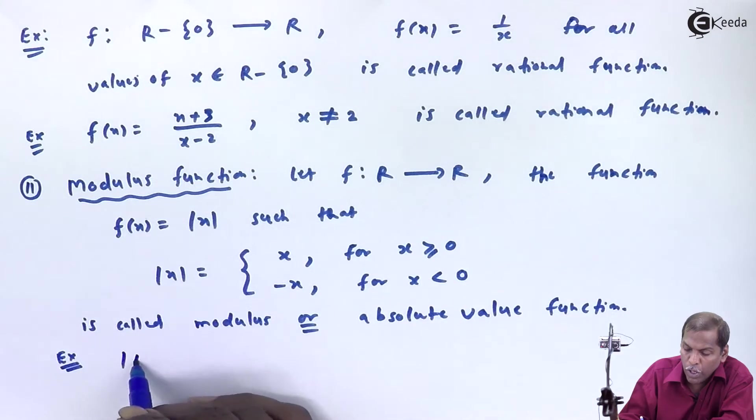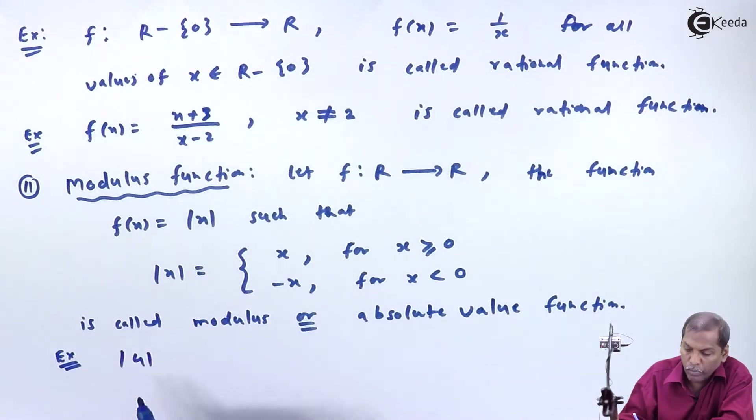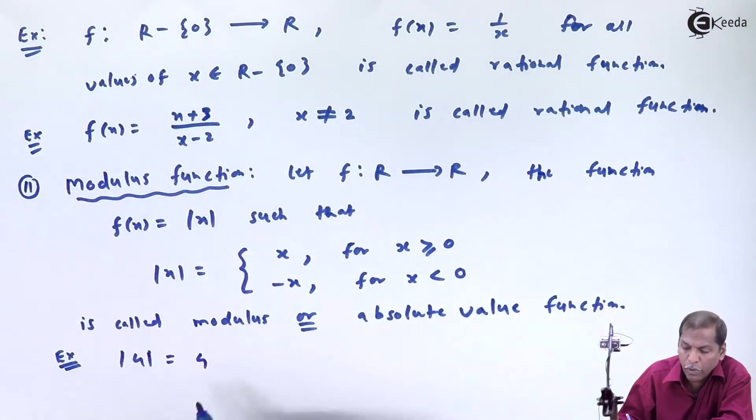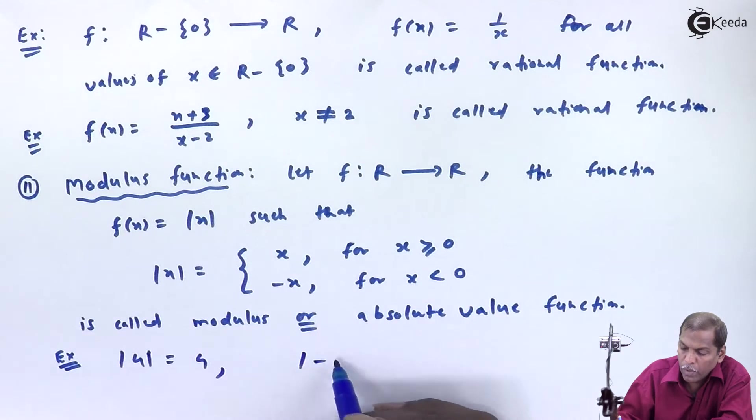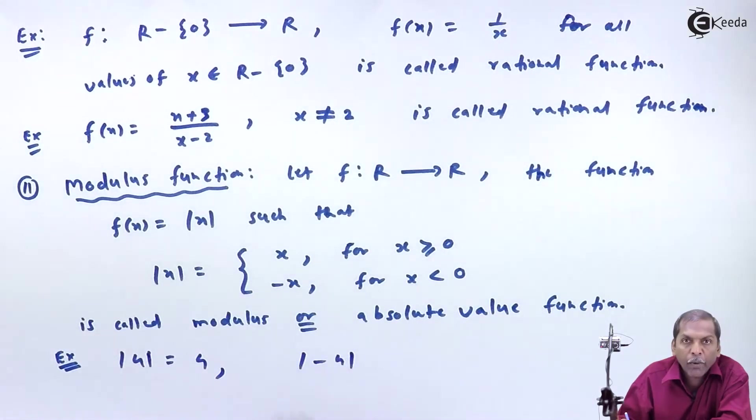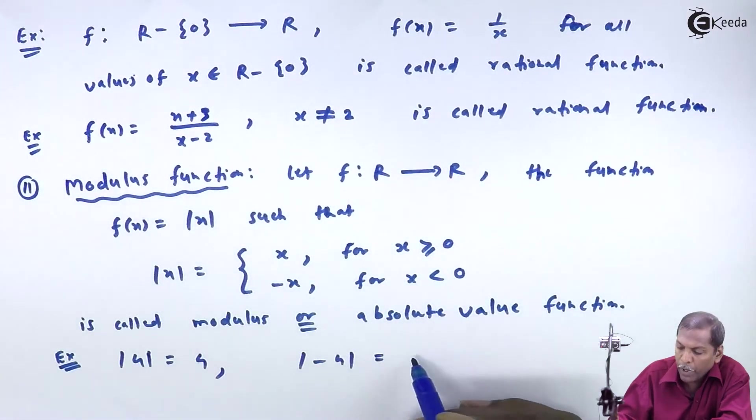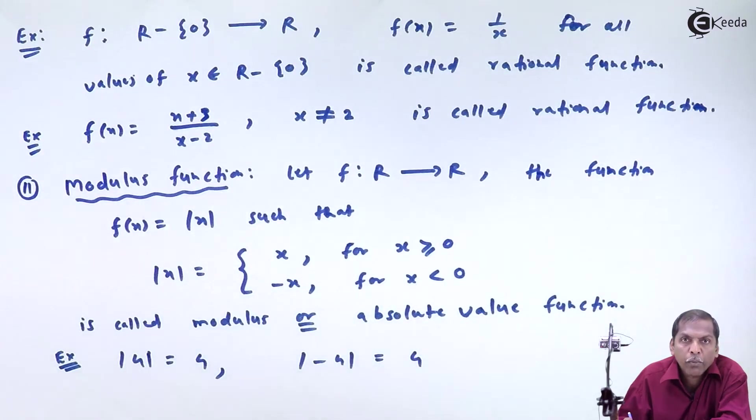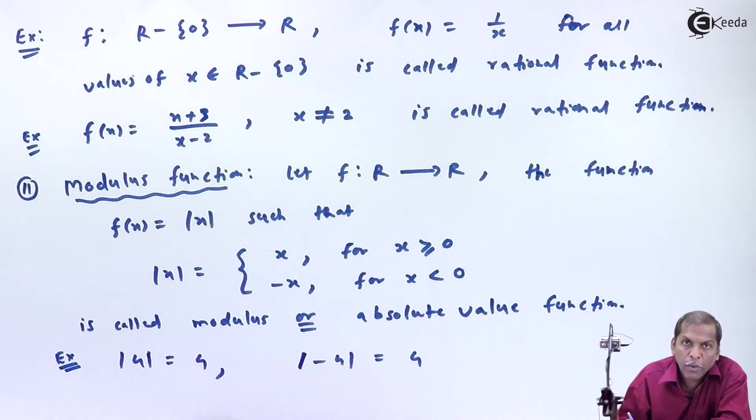Example: Modulus of 4. The modulus of a positive number gives a positive answer. But modulus of a negative number again gives a positive number. It means with the modulus sign, whether the number is positive or negative, the answer is positive.